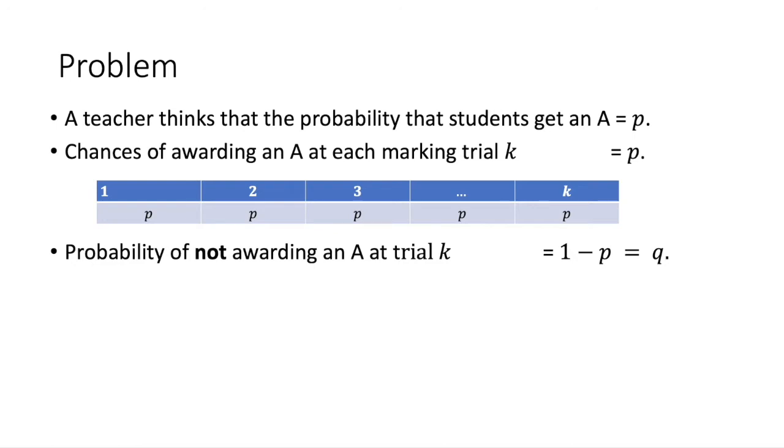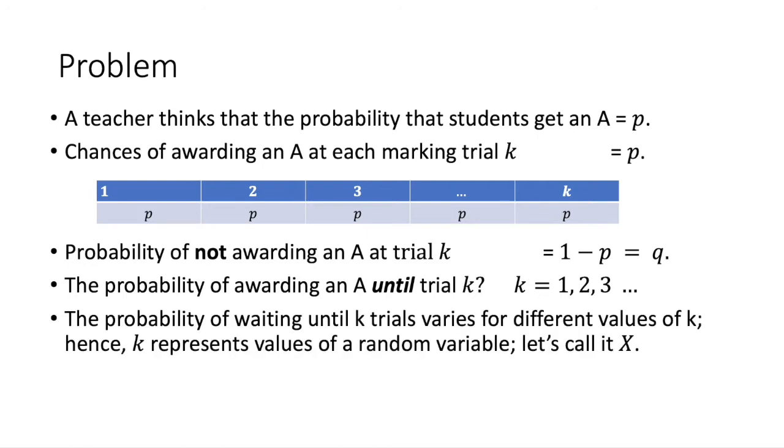Now suppose the teacher wants to know, what is the probability that an A will not be awarded until K trials? In other words, until the teacher has graded K exams. Now obviously the probability of waiting until different values of K varies. Hence we say that K represents a value of a random variable and let's call that random variable X. So the question really becomes, what is the probability that X equals K, that is, we get the first success at the Kth trial. In other words, we award the first A after we have evaluated the Kth exam script.